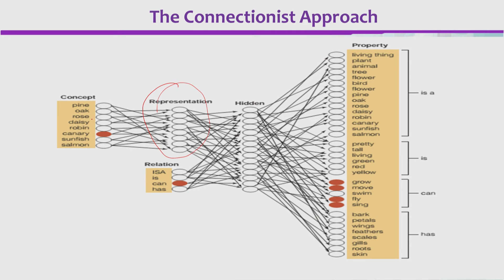The concept canary, or any of these — for example daisy or robin — can grow, can move, can fly, but this empty oval shows that it cannot swim.